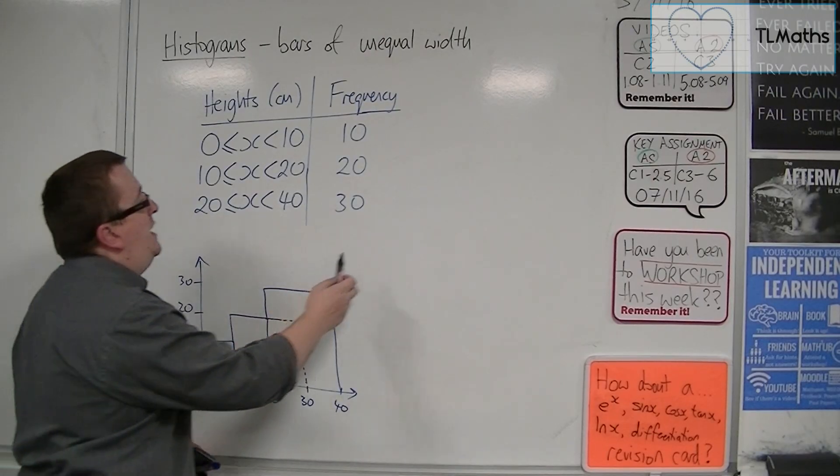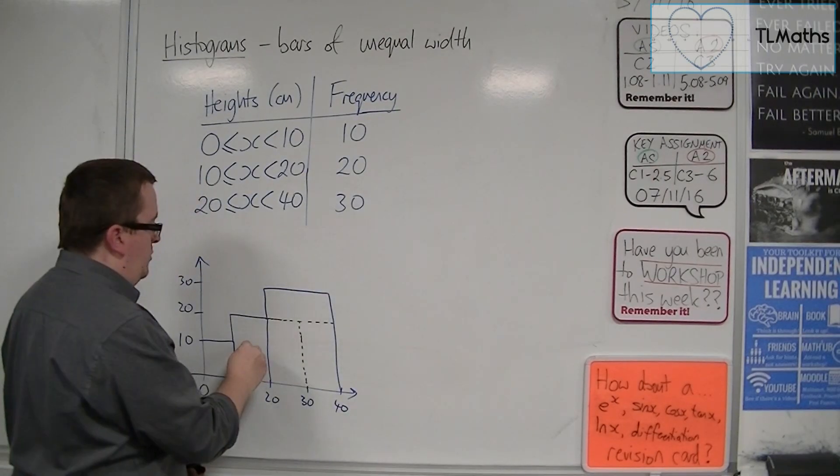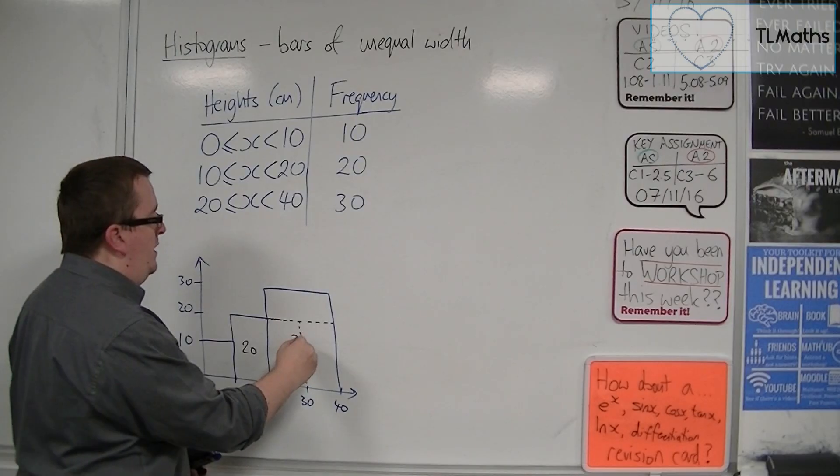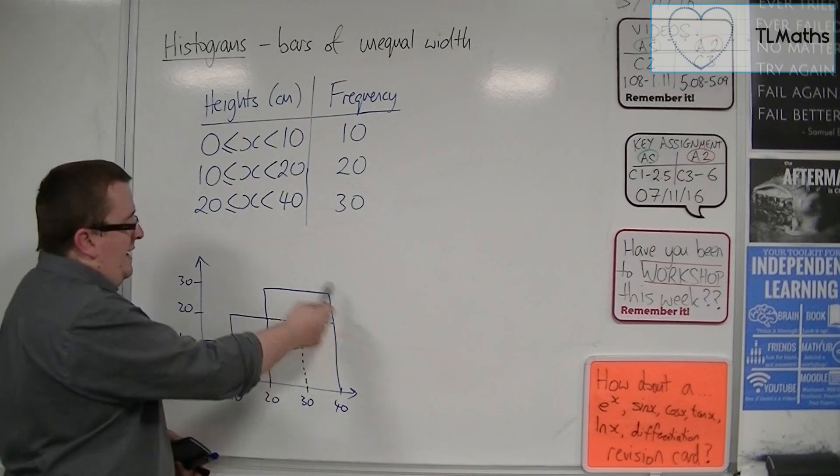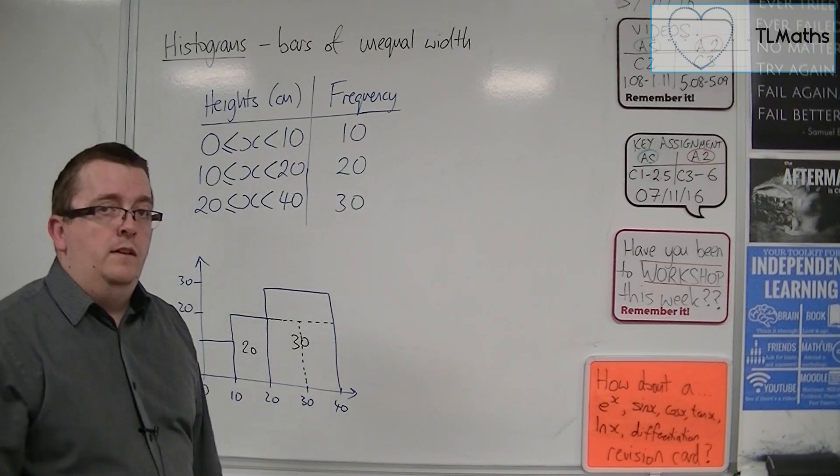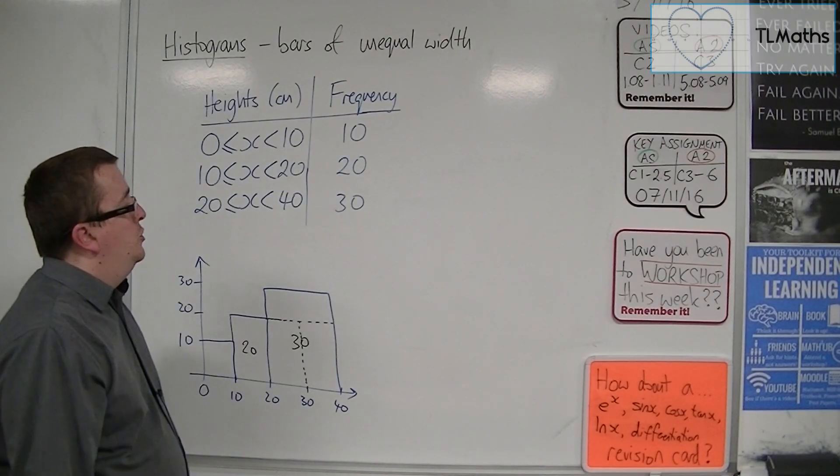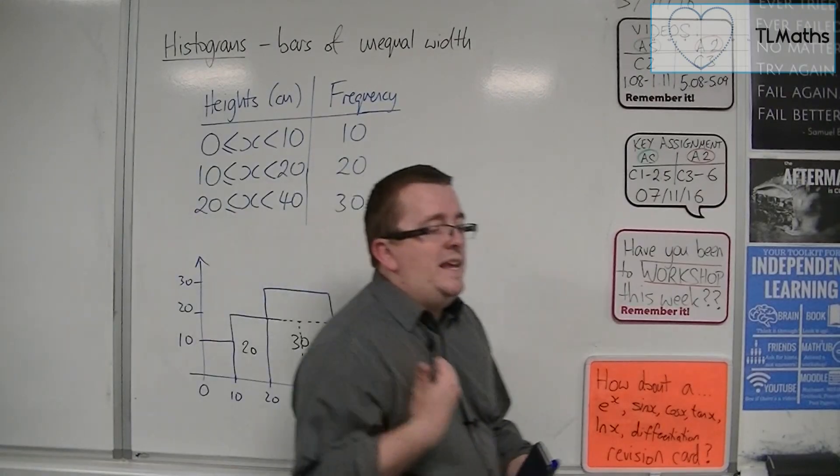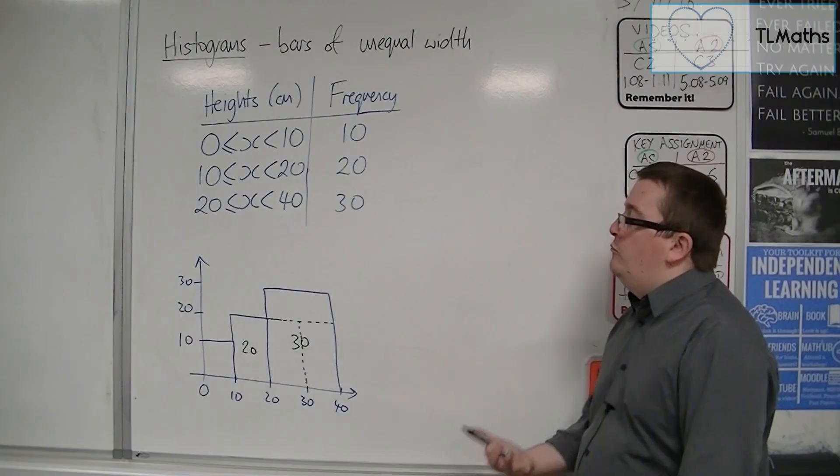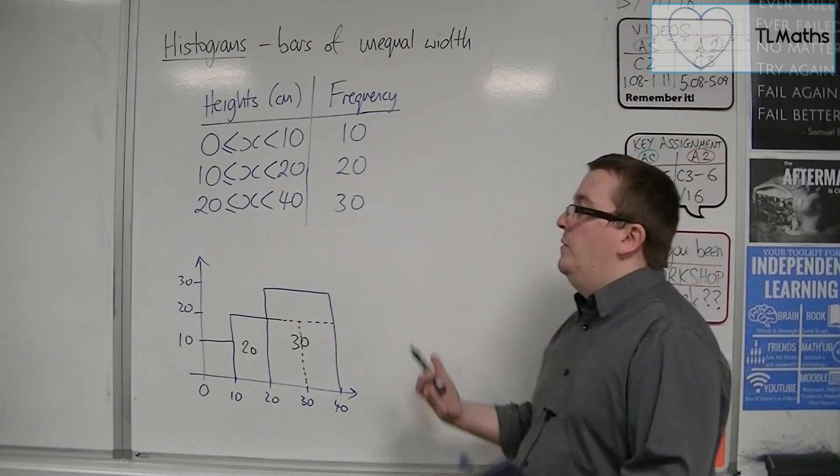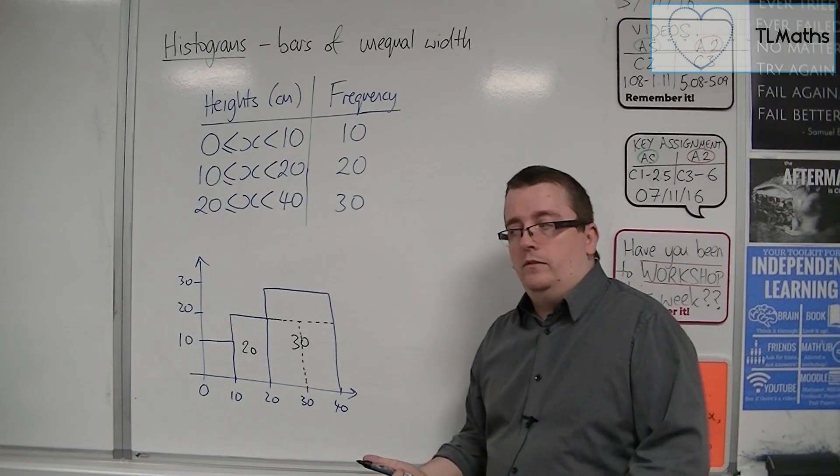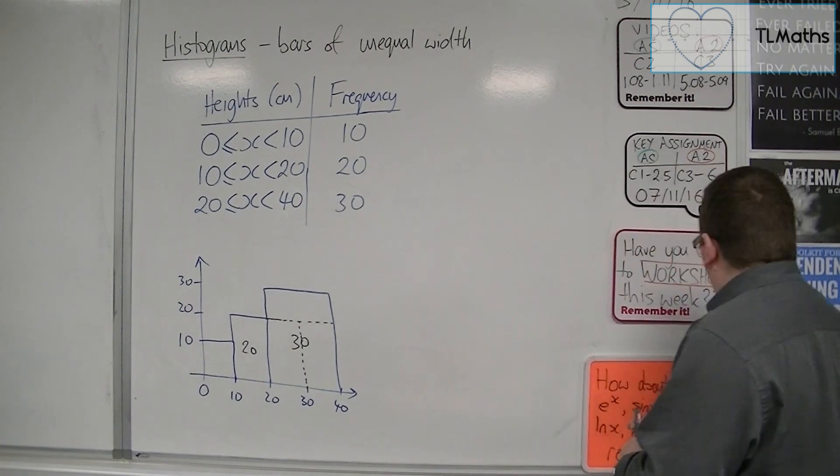But when it comes down to it, this one is only representing 20, and this whole thing is only representing 30, when really it should represent 60 because it's three times as large. So this isn't the way that we represent histograms with bars of unequal width. We can't use that method.